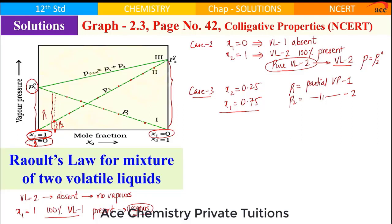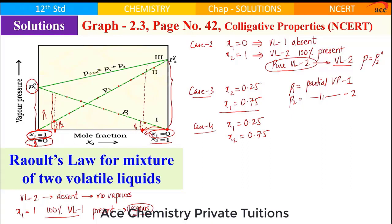In case 4, x1 value is 0.25 and x2 value is 0.75. Here x1 is 0, so at this place x1 will be slightly larger. Here x2 is 1, so at this place x2 will be slightly smaller. If you plot the points, one will be p1 and the other will be p2.